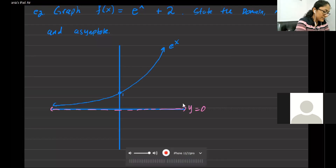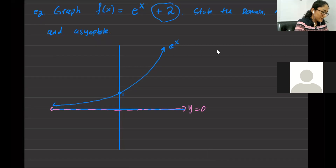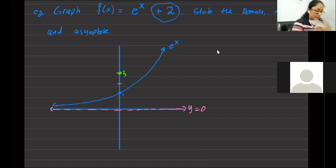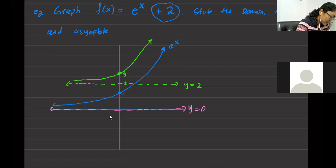What kind of shift is the plus 2? It's a vertical shift up 2. So we just take the graph and move everything 2 units up. The point (0, 1) goes up 2 units to become (0, 3). And the asymptote will also travel 2 units up — it will now be at y equals 2, the new horizontal asymptote. The graph continues with the same shape, just shifted 2 units up. That is our graph f of x equals e to the x plus 2.